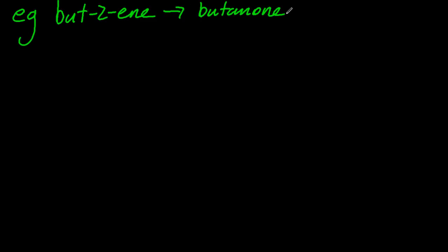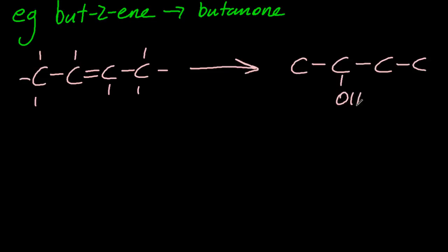But-1-ene to butanone. So turn the alkene to an alcohol. That's adding water and sulfuric acid. I've got to heat that up.